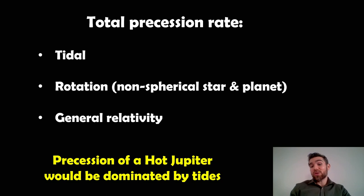But for something like a hot Jupiter, the precession of its orbit is going to be mostly dominated by the tides because it's so close to the star. So for those sorts of planets, it's dominated by the tides.